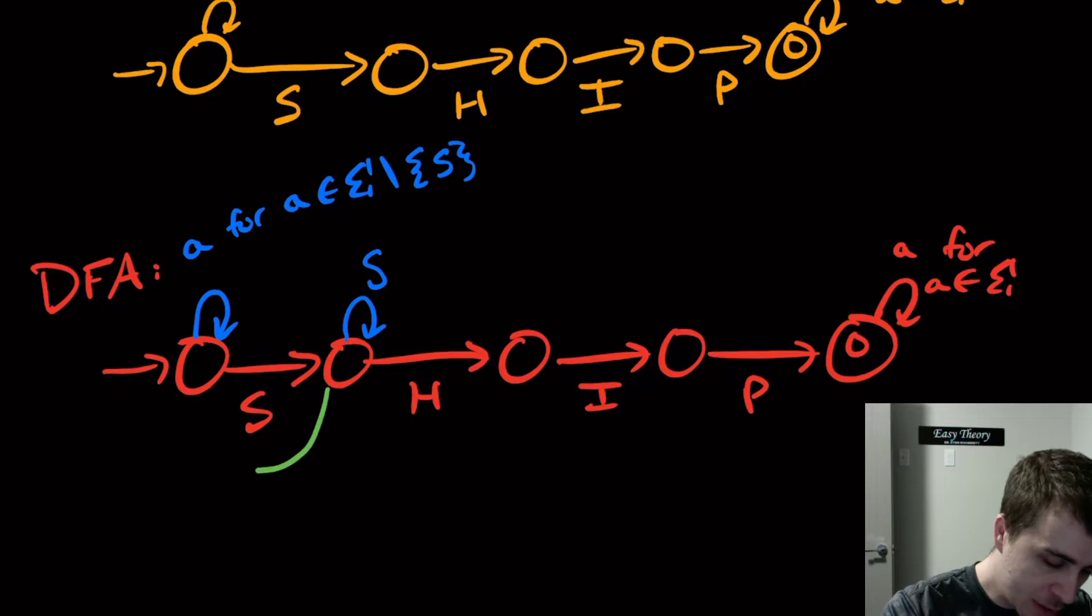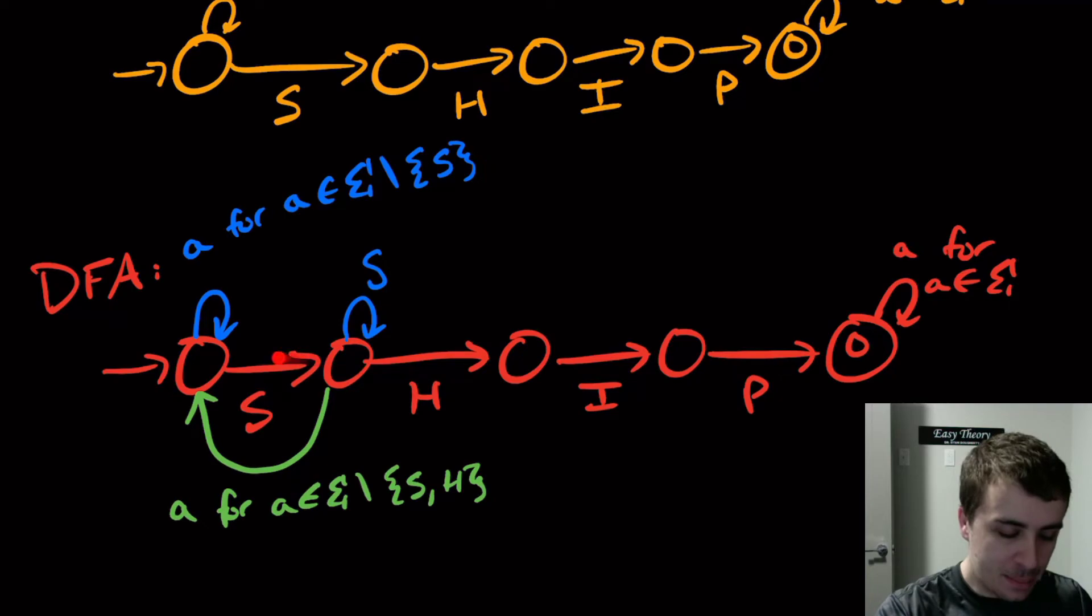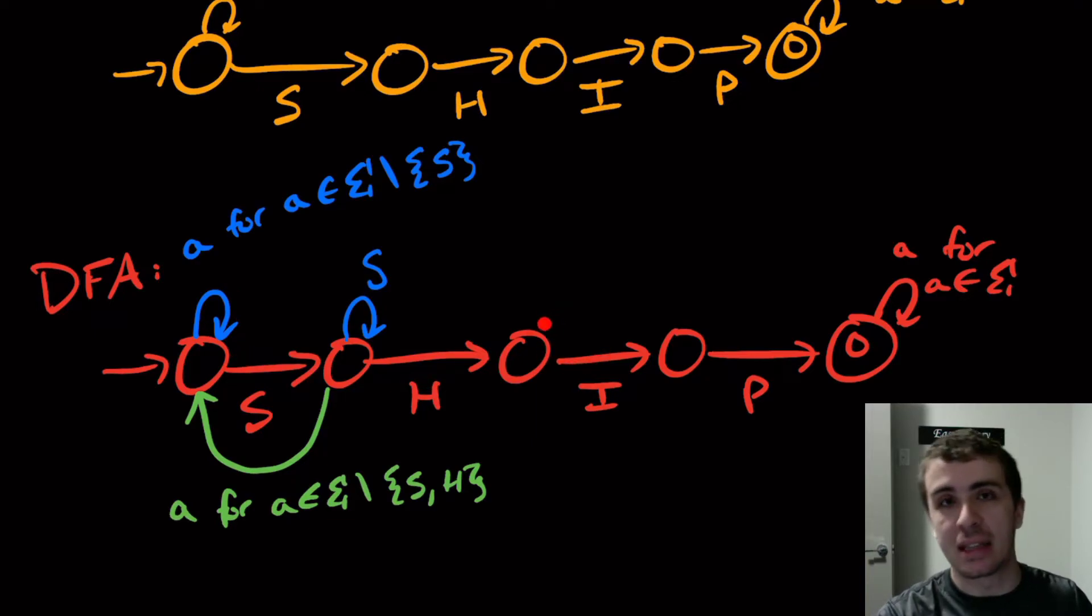So I'm going to have a green transition that comes back here, which is a for a in Sigma set minus the set S and H. So it's getting a little bit more complicated. Then this state has every single possible transition exactly once, which is good. This state, if it sees anything other than an I, then we need to start over, because if it sees an S right here, that means the last thing we saw is S H S.